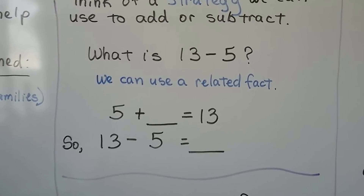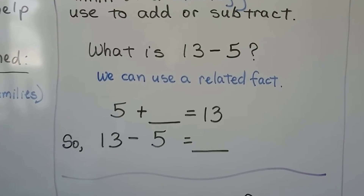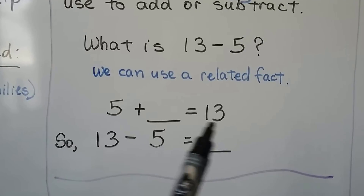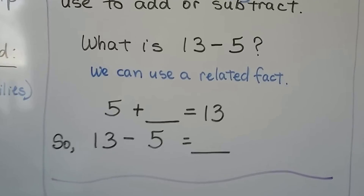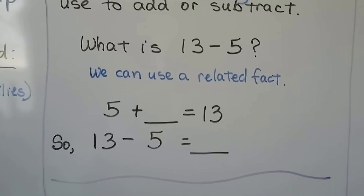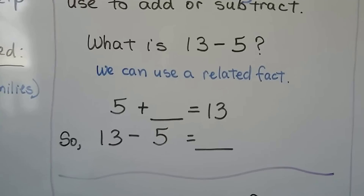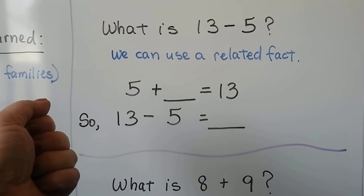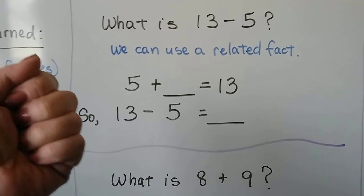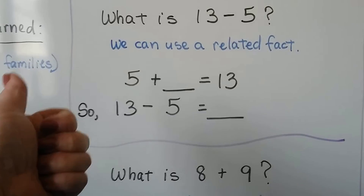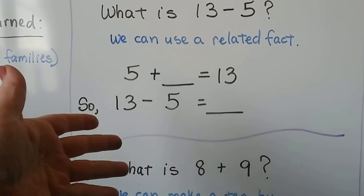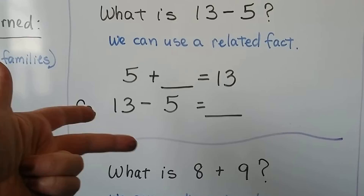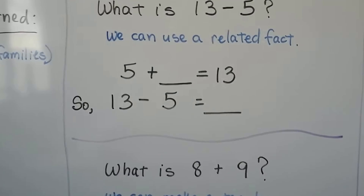Do you know your math facts? 5 plus what number equals 13? If you don't, we can count on starting with 5 and go up to 13: 5, 6, 7, 8, 9, 10 — that's 5 — 11, 12, 13. That's 8.